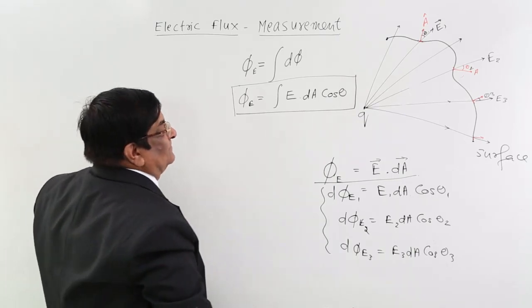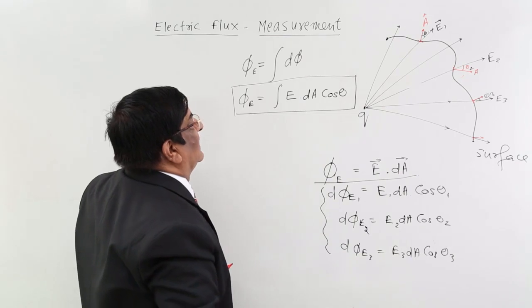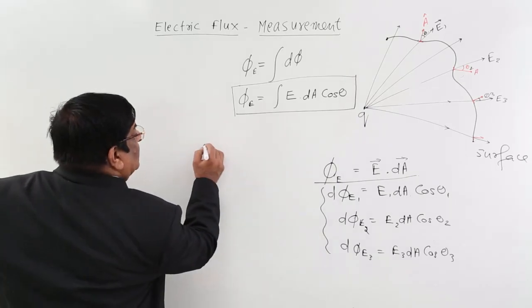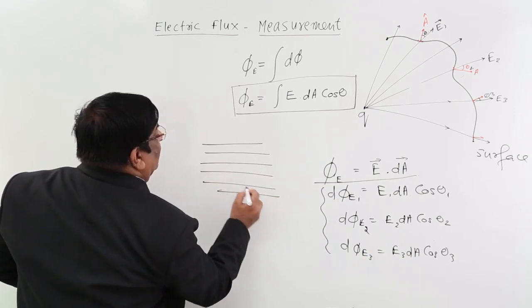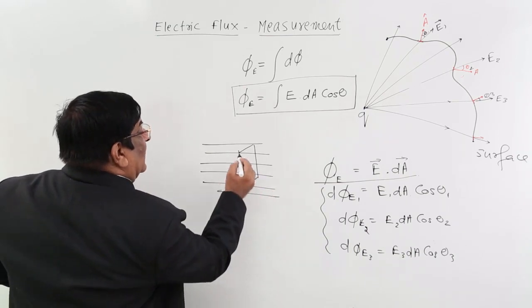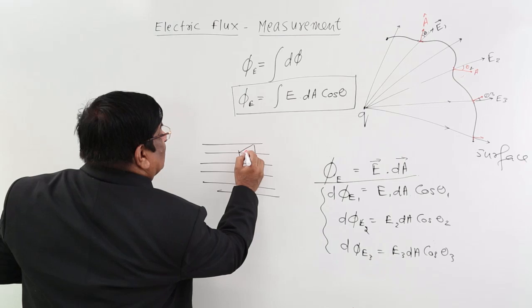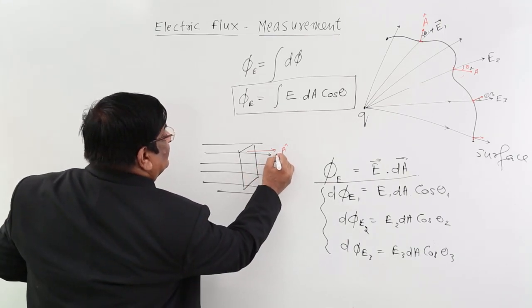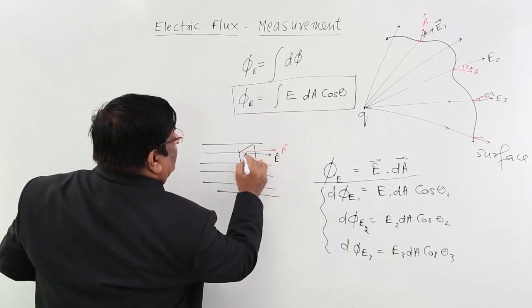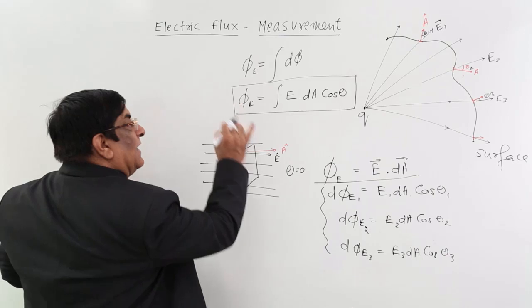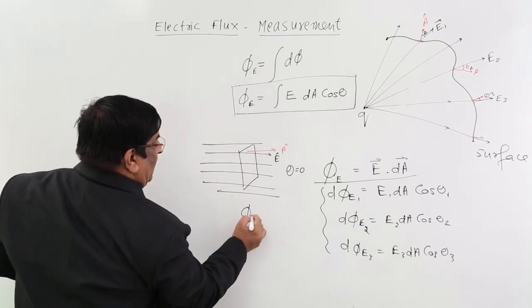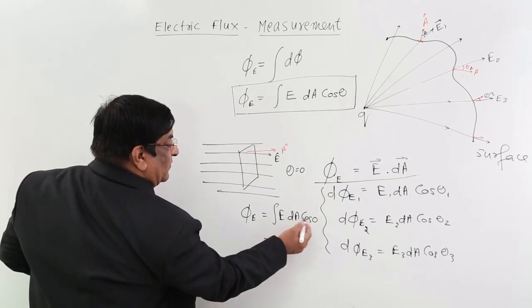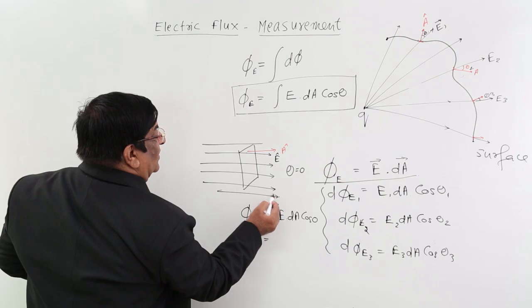So this we are going to use very widely and this is electric flux measurement for any area, this is the general formula. Okay, this general formula, if we apply for a uniform electric field and we have one area here, that area is also a plane area. So at every place, what is the area vector? Answer: this is the area vector and this is the electric field vector. And what is the value of theta? Both are parallel, so theta is equal to 0, for every place theta is equal to 0. Then flux will be how much? Flux is equal to integration of E dA cos 0, cos 0 is equal to 1.